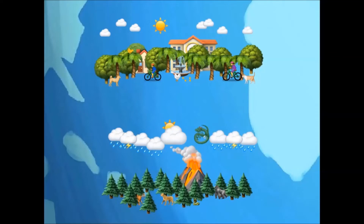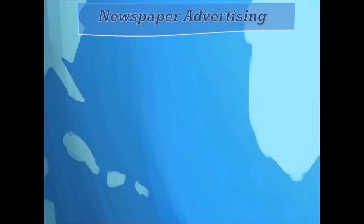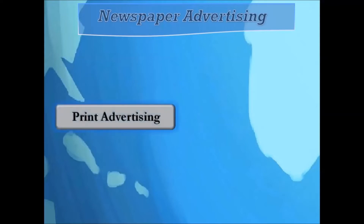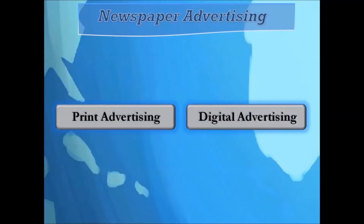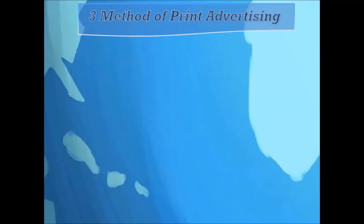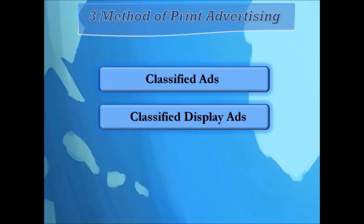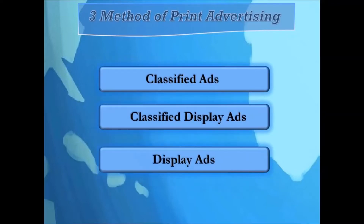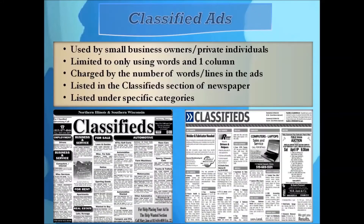There are a lot of factors that determine the pricing of newspaper ads. The field of newspaper advertising is divided into two platforms: print advertising and digital advertising. Let's first take a look at print advertising. There are three ways you can advertise in print: classified ads, classified display ads, and display ads.